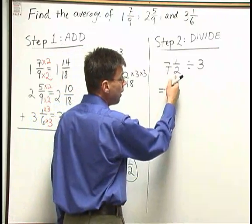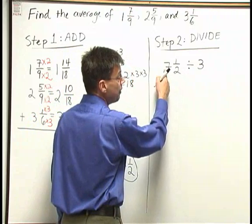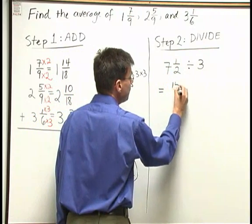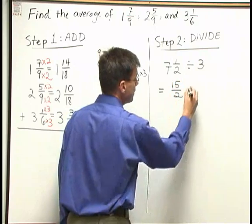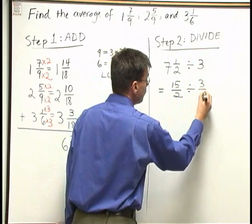To do this division now, I need to rewrite seven and a half as an improper fraction. Two times seven is fourteen, plus one is fifteen. That's fifteen halves. Divided by three, I'll write as three over one.